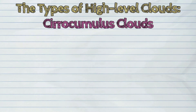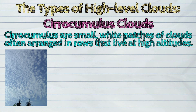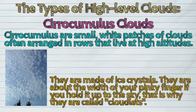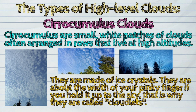Second, the cirrocumulus clouds. Cirrocumulus are small, white patches of clouds often arranged in rows that live at high altitudes. They are made up of ice crystals and are about the width of your pinky finger if you hold it up to the sky. That is why they are called cloudlets.